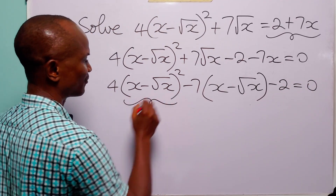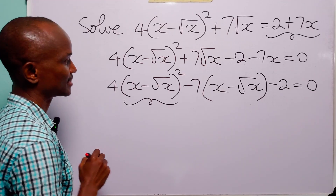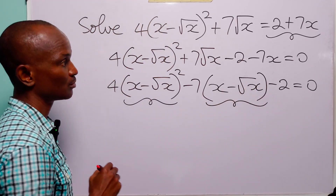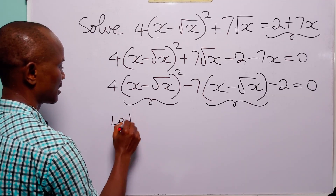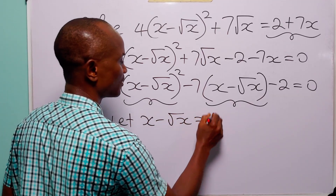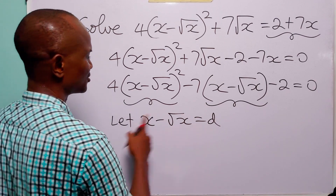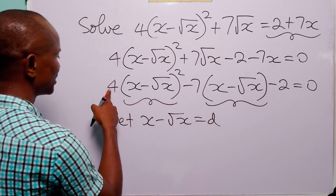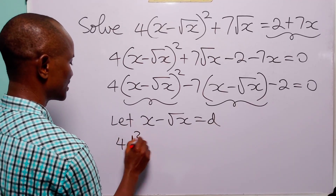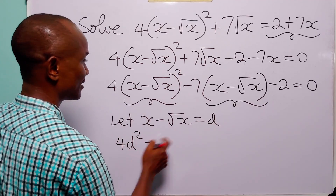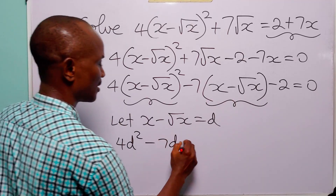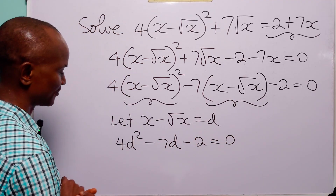Now, you can see that we have x minus root x and we have x minus root x. So, let x minus root x be equal to d. With this substitution, this equation is going to be 4 times d squared minus 7 times d minus 2 is equal to 0.